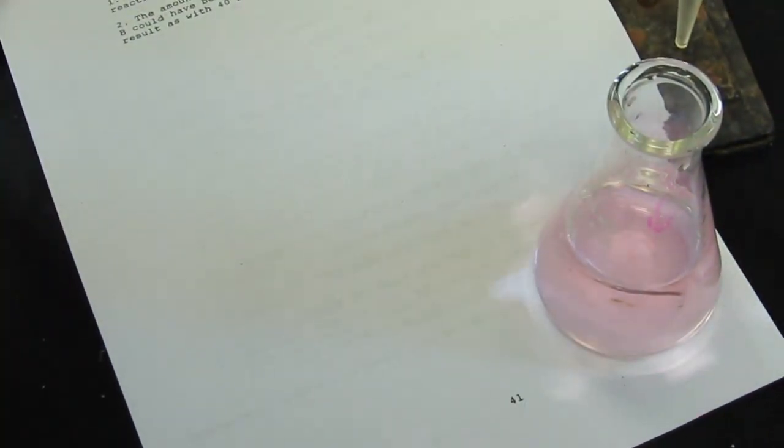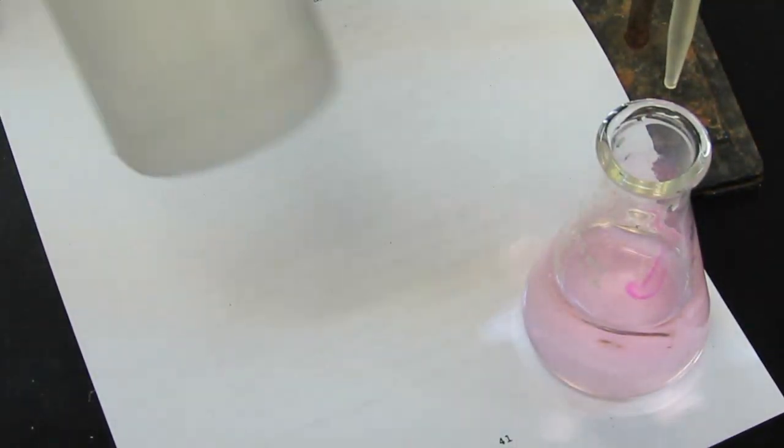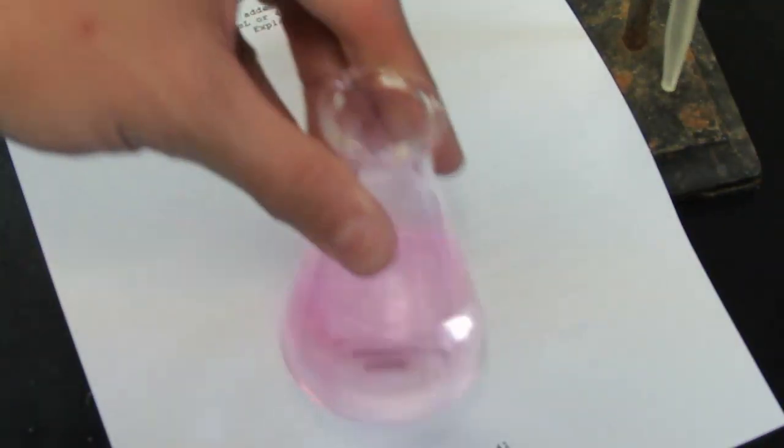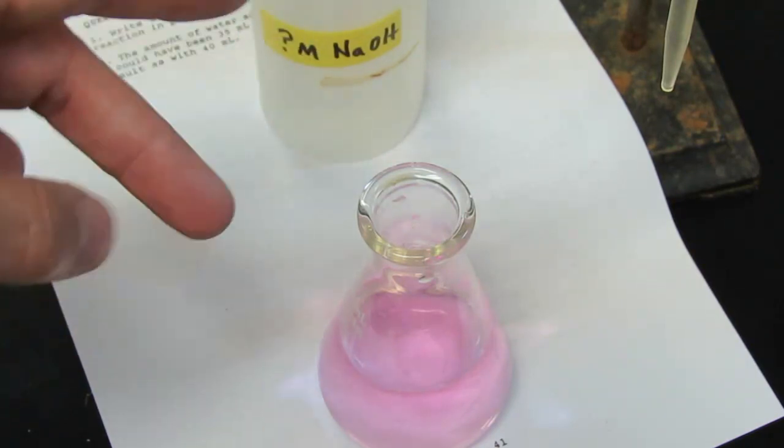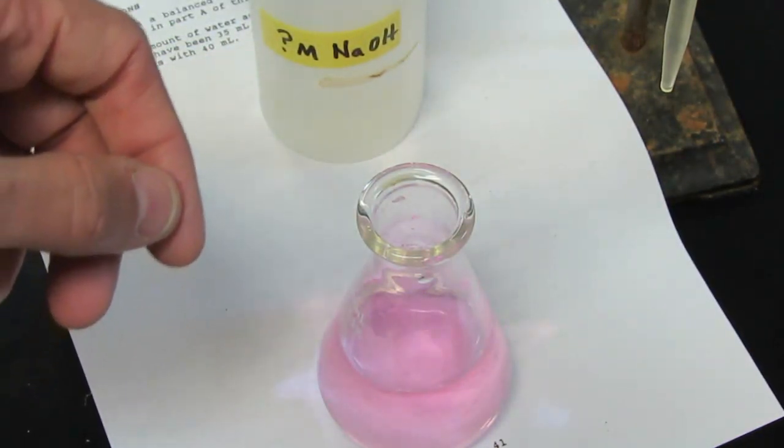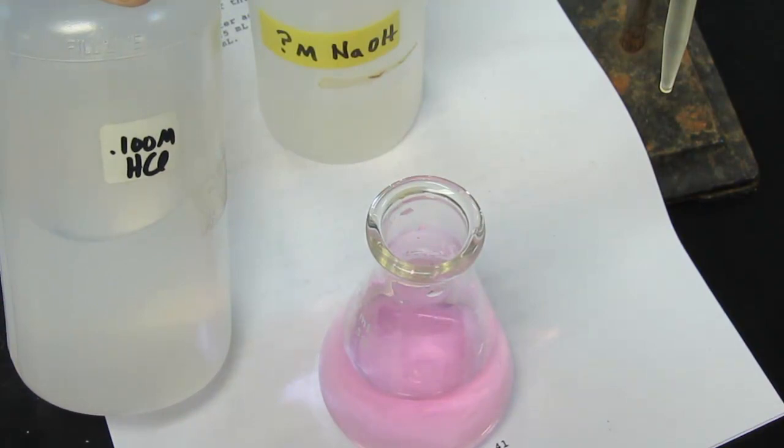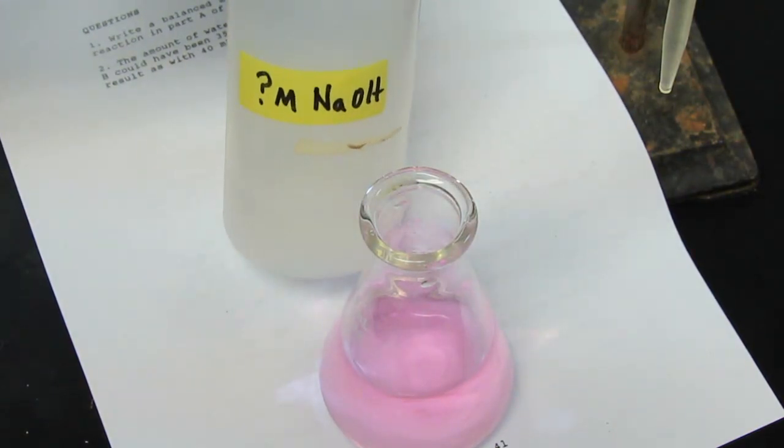So we've finished our titration. You guys know the molarity of the acid. Once again, the acid was 0.100 molar hydrochloric acid. We do not know the molarity of the base. That's the objective in the first part of this experiment - to find the molarity of that base. So you now have enough information to do that. Think about this. You know the initial and final base reading, so you know the volume of base that was required. And you know the initial and final acid volume, so you know the volume of acid that was used and its molarity. With that information, you should be able to calculate the molarity of your sodium hydroxide solution. We call this process standardization.